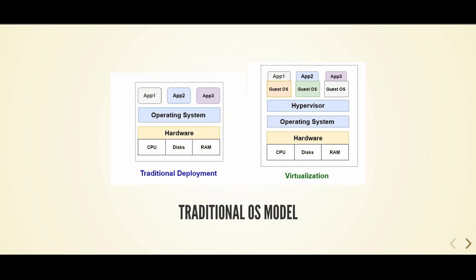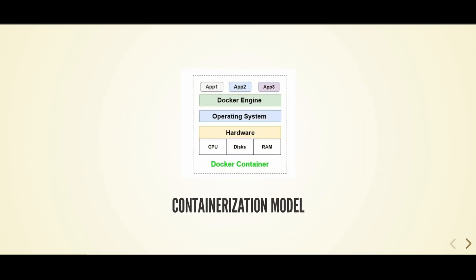In the traditional operating system model, applications run directly on the physical or virtual machine's operating system. Each application might need its own separate machine or virtual machine for isolation or different operating system environments. This can lead to underutilized resources and increased overhead for managing multiple operating systems. Containers provide a lightweight form of virtualization — multiple containers share the host's operating system kernel while keeping applications and their dependencies packaged together in separate user spaces, enabling better resource utilization.